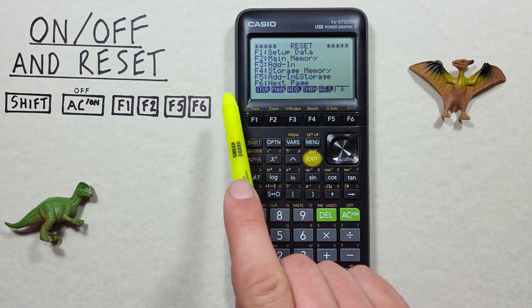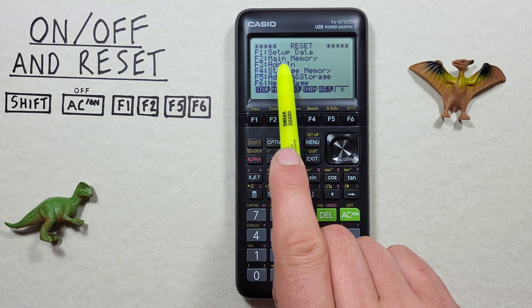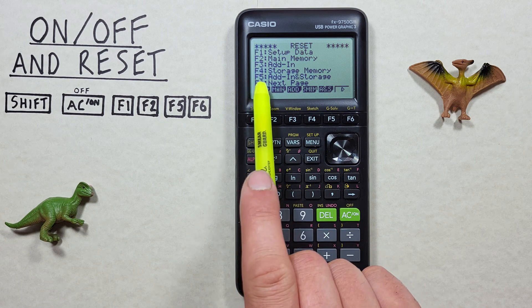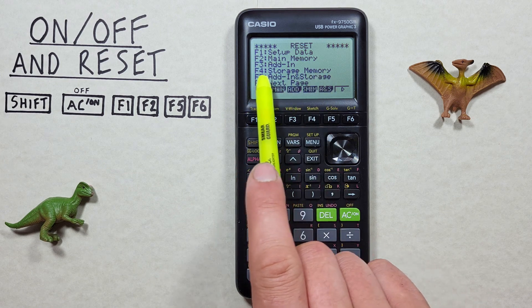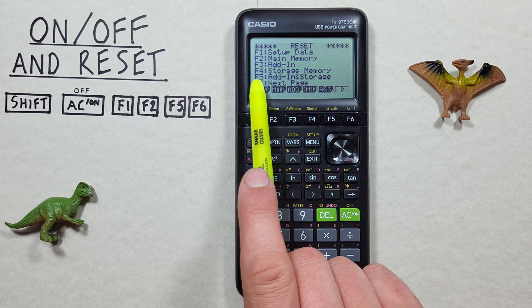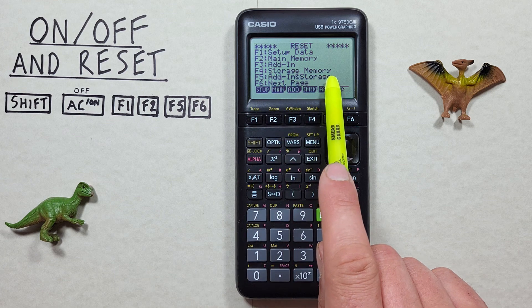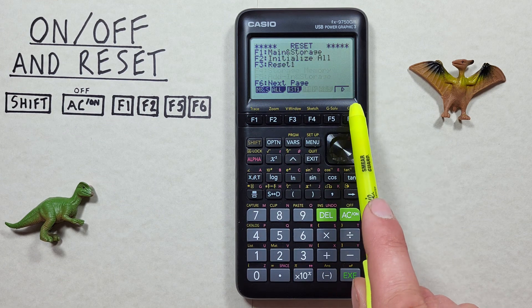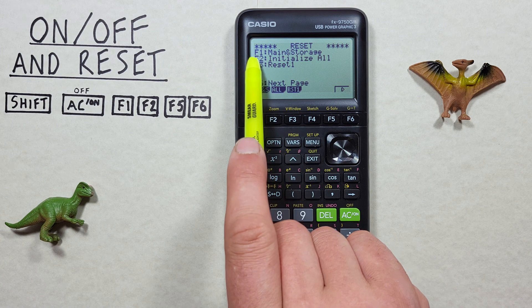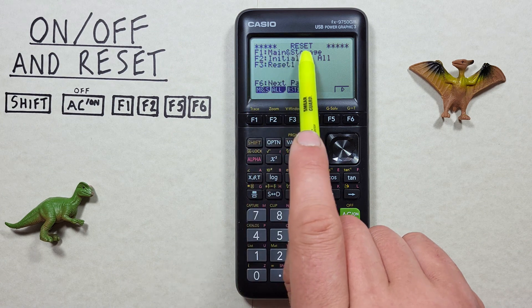There are some other options here like our add-on applications that we can reset, our storage memory which is our more long-term memory, both our add-on and storage memory.